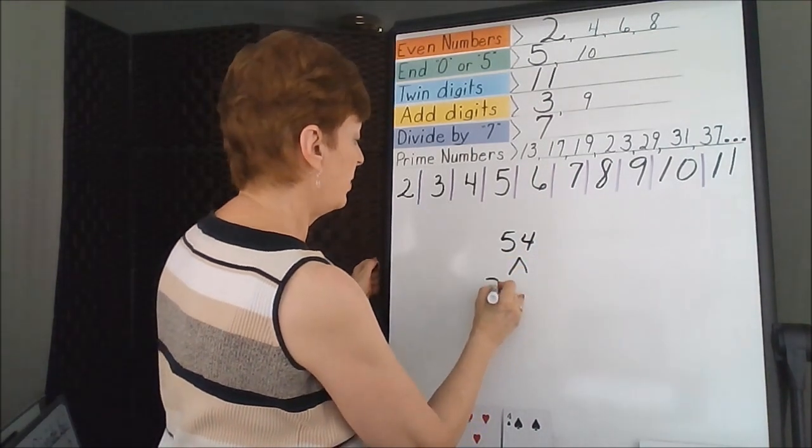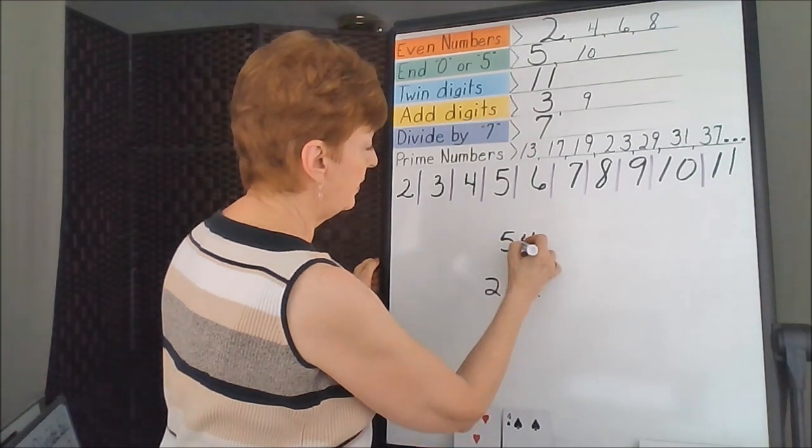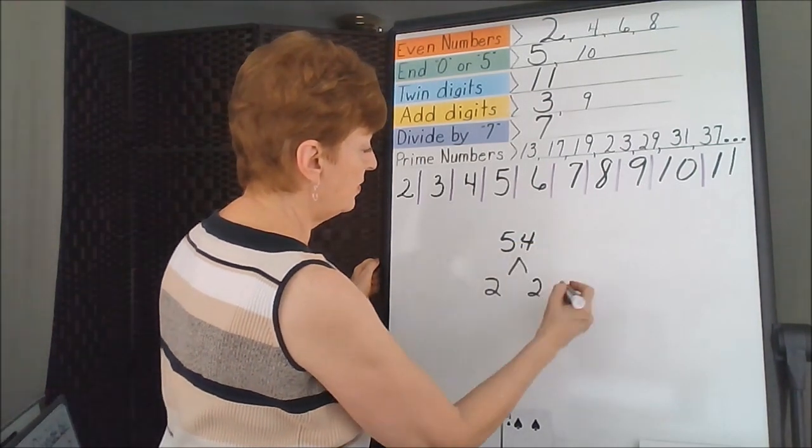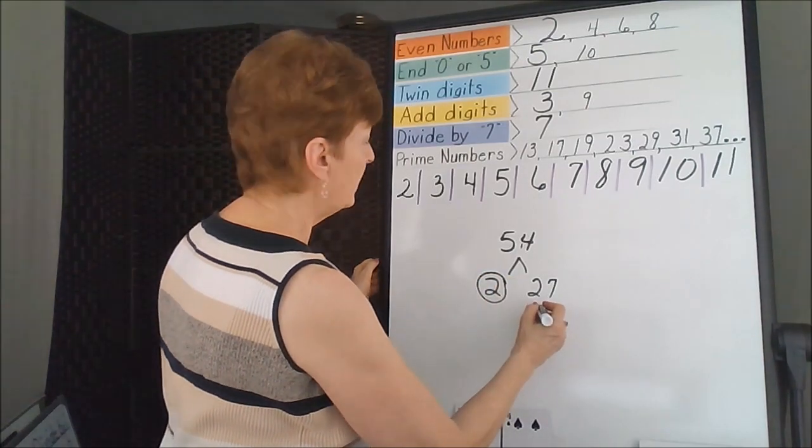54 is even, so 2 is going to work. 2 divides into 5 twice with 1 left over. 2 divides into 14 seven times, giving us 27. 2 is prime.